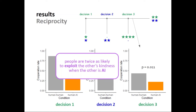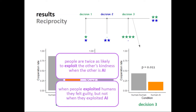We also asked people how they felt about the various outcomes after playing the game. When people exploited humans at the last decision node, they reported feeling very guilty — on a scale from 'not at all guilty' to 'very guilty,' people reported extreme levels of guilt. But when they interacted with the machine, they did not feel guilty at all about the decision to exploit the machine. That could explain why people are willing to exploit the machine.